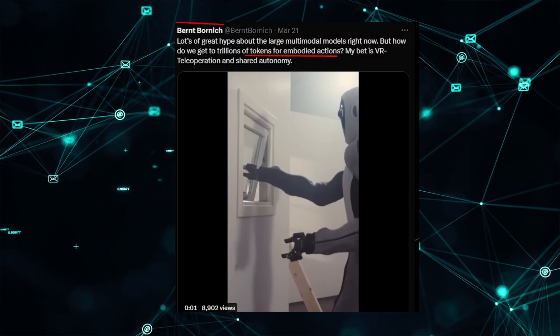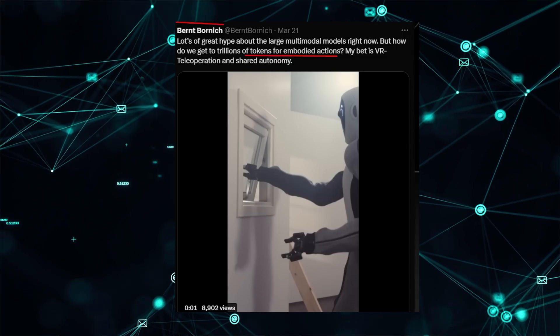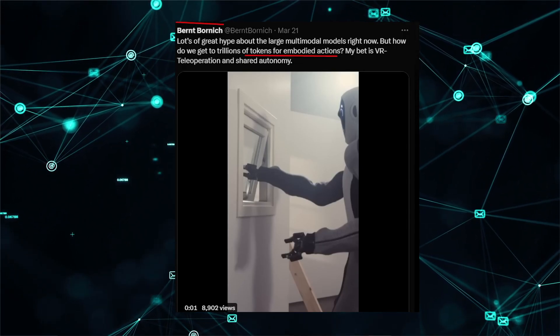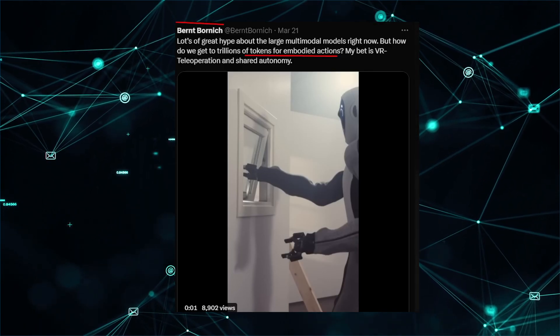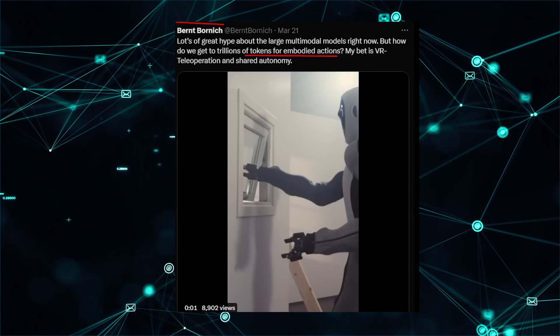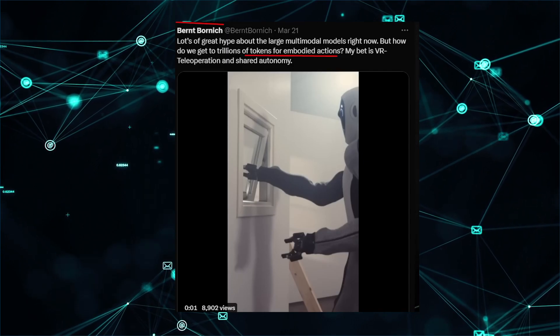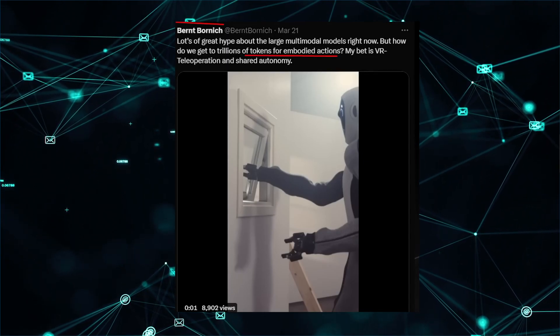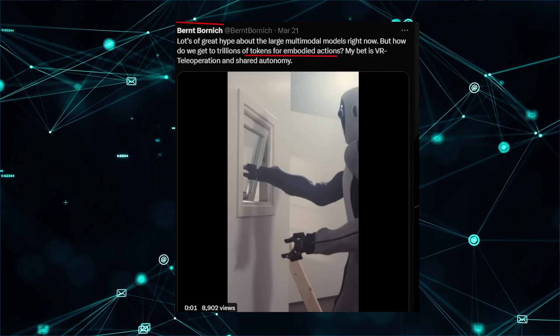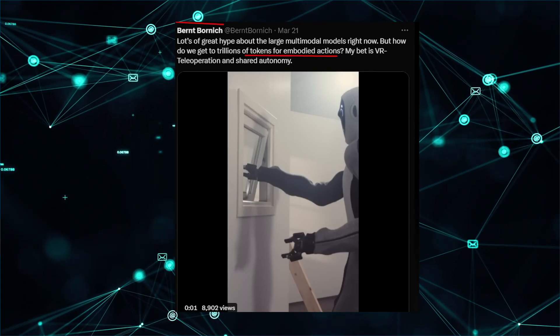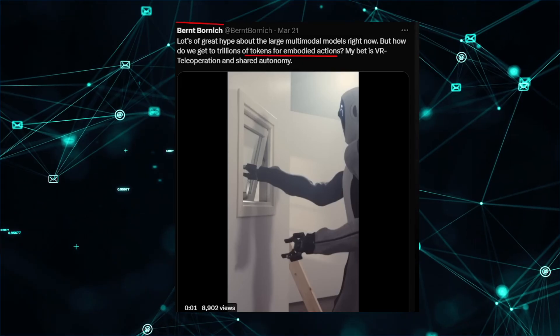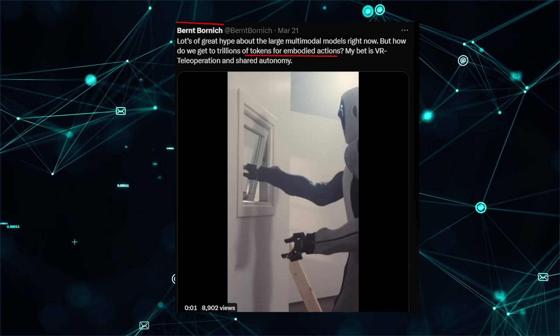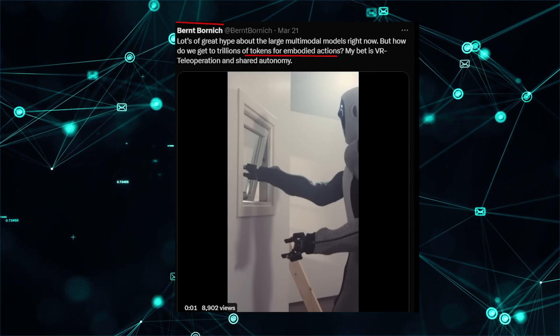I forgot to mention that they don't have many followers on Twitter. They only have 2,000 followers and they don't get many retweets. They did, however, retweet this tweet where someone said, 'Lots of great hype about the large multimodal models right now, but do we get to trillions of tokens for embodied actions?' Which basically means, when do we get actions that are embodied in the real physical world? They actually retweeted this talking about multimodal models, which is of course a reference to ChatGPT's new multimodal model, so this is certainly a sign towards something.